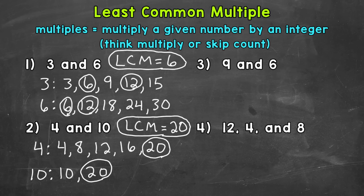Let's move on to number three, where we have nine and six. So we'll start with some multiples of nine here. So nine, 18, 27, 36, 45.